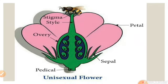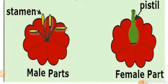In a flower, if any of these four parts is missing, then it is called an incomplete flower. Incomplete flowers are also called unisexual flowers. 'Uni' means single, meaning it contains either male or female parts. Unisexual flowers are further divided into male flowers and female flowers. The flower with androecium and without gynoecium is called a male flower, while the flower with gynoecium and without androecium is called a female flower.